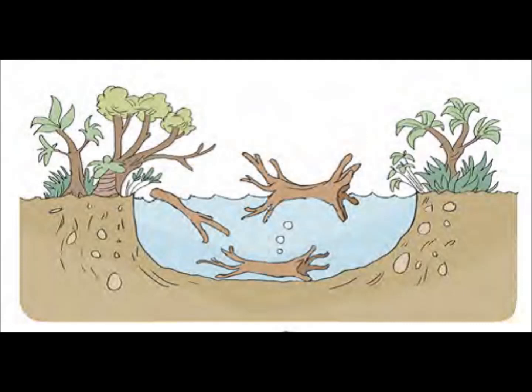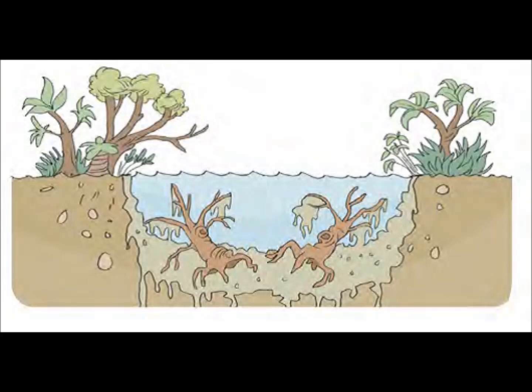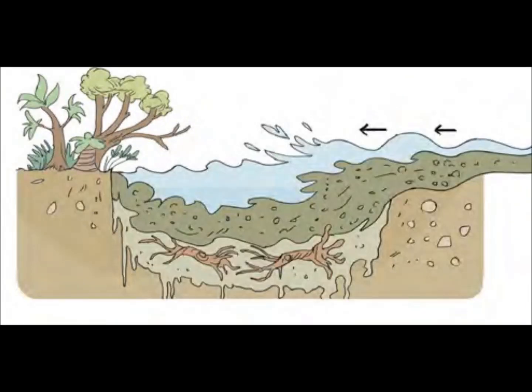Many years ago, some parts of the world were covered with thick forests and swamps. Each year, some trees died. These trees fell into the swamps, and the dead trees formed a thick layer of rotting vegetation. Rivers washed sand and mud into the swamps, and the layer of dead trees was buried under the sand and mud.